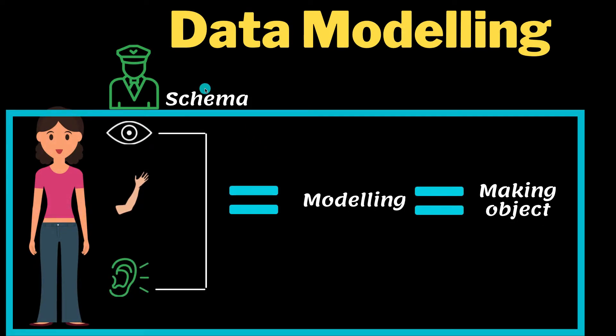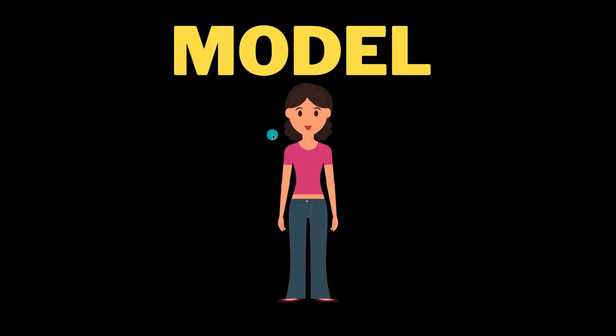Here we have what is called data modeling. But before that, let me explain what is Model first. Model is an object of which you want to create. In our project, we have three models.